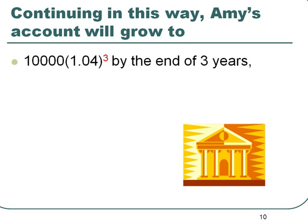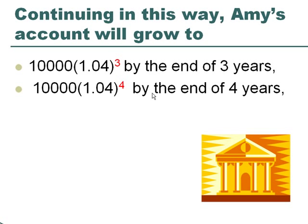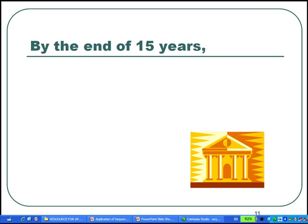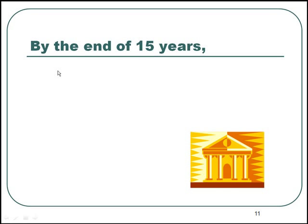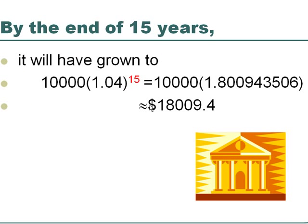By the end of 3 years, and $10,000 times 1.04 raised to power 4 by the end of 4 years, and so on. Following the same pattern, by the end of 15 years the account will grow to $10,000 times 1.04 raised to power 15, which is approximately equal to $18,009.40.